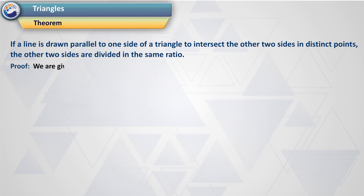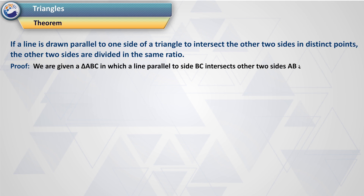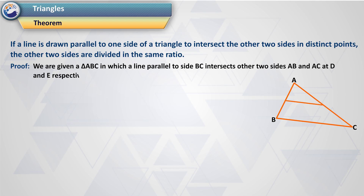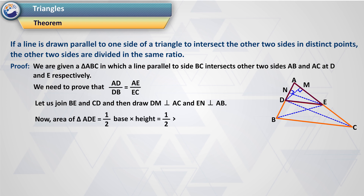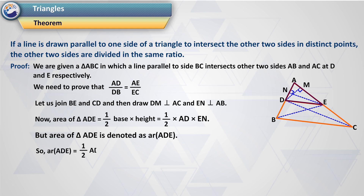Proof. We are given a triangle ABC in which a line parallel to side BC intersects the other two sides AB and AC at D and E respectively. We need to prove that AD/DB = AE/EC. Let us join BE and CD, then draw DM perpendicular to AC and EN perpendicular to AB. Now, area of triangle ADE equals half of base into height, which equals half × AD × EN.